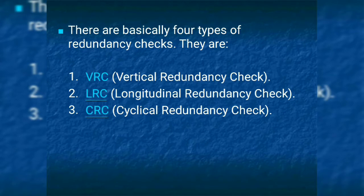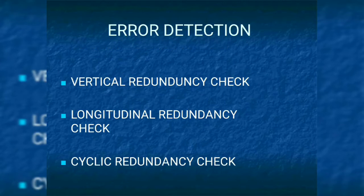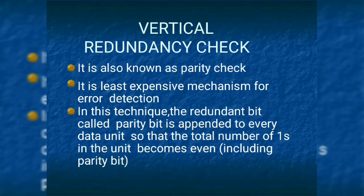There are usually four types of redundancy checks: VRC, LRC, CRC, and a fourth method. VRC means Vertical Redundancy Check, LRC means Longitudinal Redundancy Check, and CRC means Cyclic Redundancy Check. Vertical Redundancy Check is also known as a parity check. It is the least expensive mechanism for error detection. In this technique, the redundant bit is called a parity bit, and it is appended to every data unit so that the total number of 1s in the data unit, including the parity bit, becomes even.